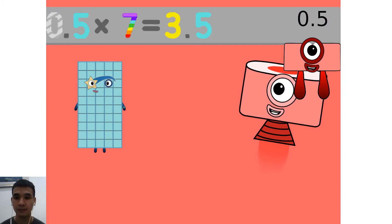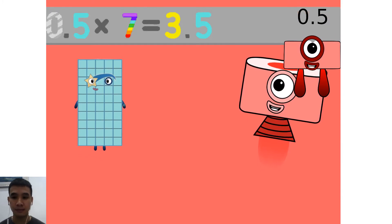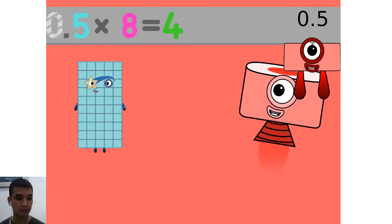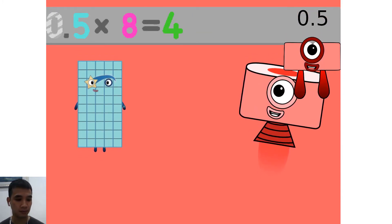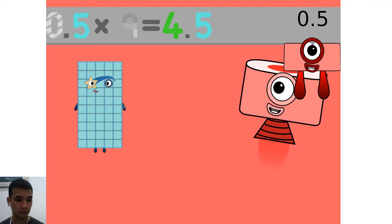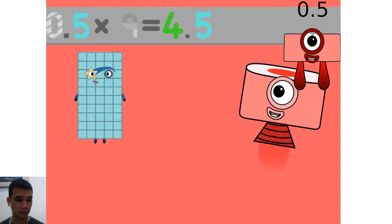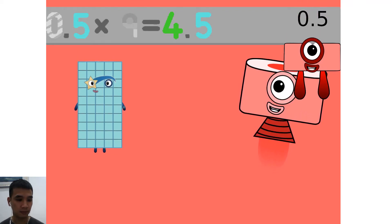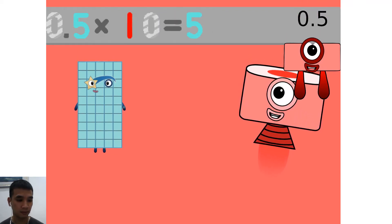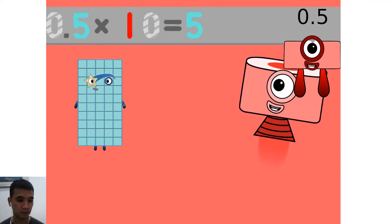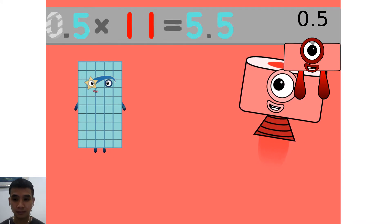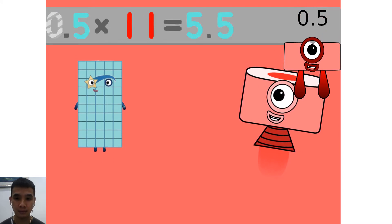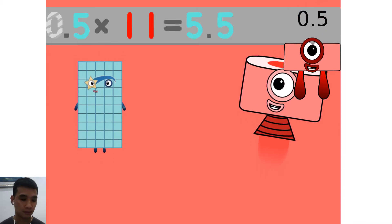0.5 times 7 equals 3.5. 0.5 times 8 equals 4. 0.5 times 9 equals 4.5. 0.5 times 10 equals 5. 0.5 times 11 equals 5.5.